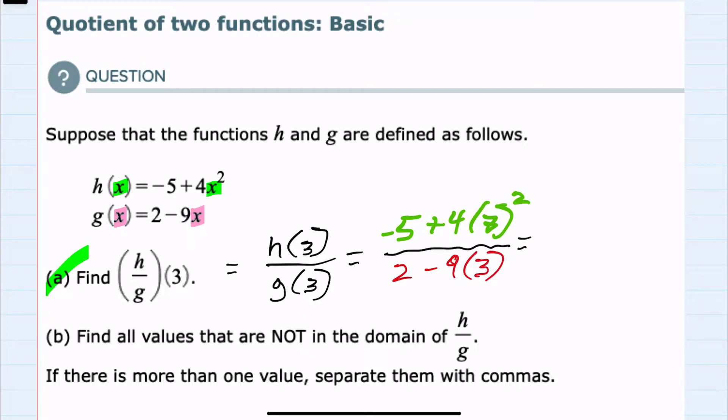We can then simplify in the numerator and denominator, first doing the exponent in the numerator. This would be -5 + 4(9), which is 3 squared. In the denominator, I can start with the multiplication: 2 - 9(3) = 2 - 27.